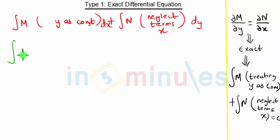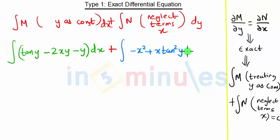M is nothing but tan y minus 2xy minus y into dx. Then we have N, which is minus x square plus x into tan square y minus x square y into dy. So in this part we will consider